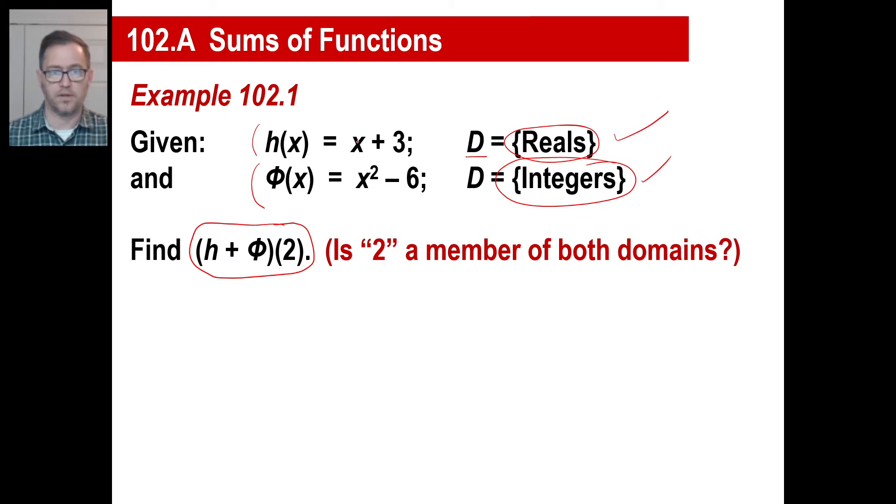Well, the easiest thing to do is just to stick two in there. Two plus three, five. Plus, and then two goes into here. Two squared is four. Then minus six, and that's an easy arithmetic problem. It's just three.